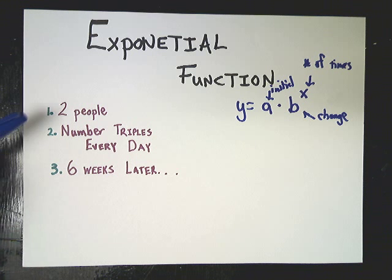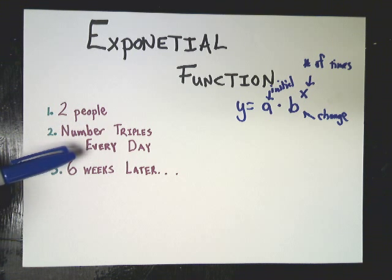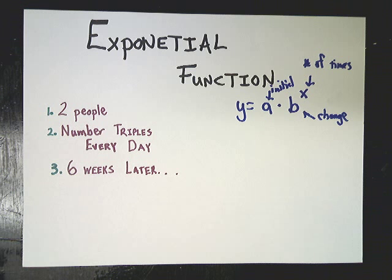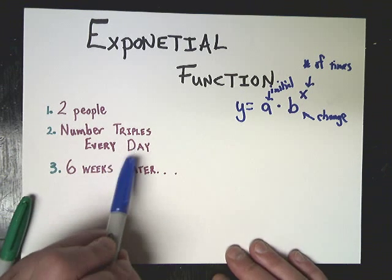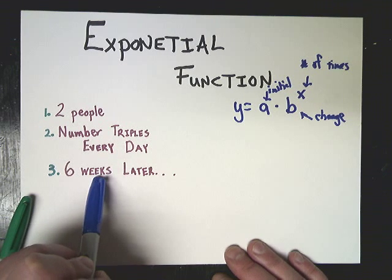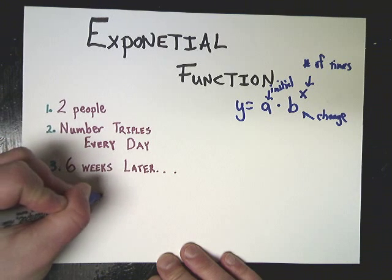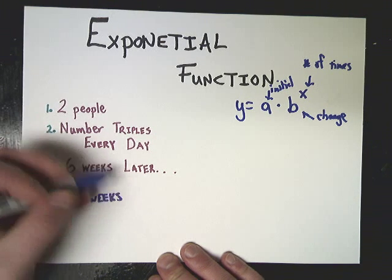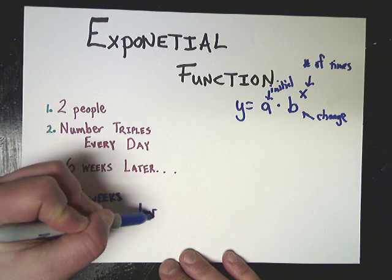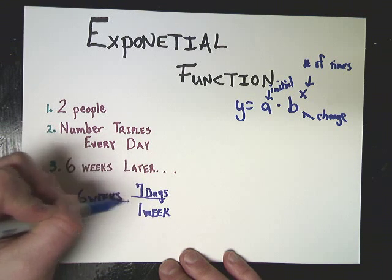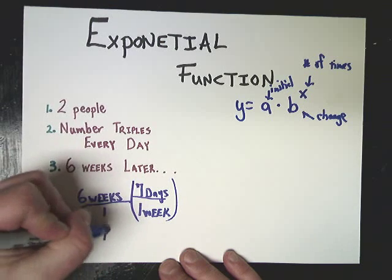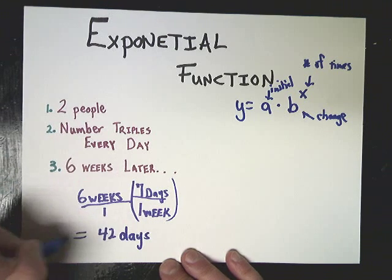Every single day, this thing is tripling. So tomorrow, 6 more people will get it. So I need to get some idea of how many people have this zombie virus in 6 weeks. Now, in order to do that, I need to do a little bit of conversion. I set this up in days, and I want to know something about weeks. So I need to see how many days are in 6 weeks. So if you have 6 weeks, and I know there are, in 1 week, there are 7 days. I want to know in 42 days.